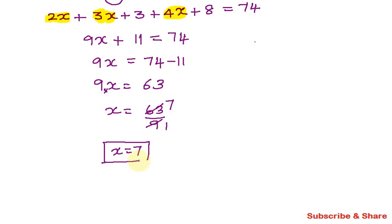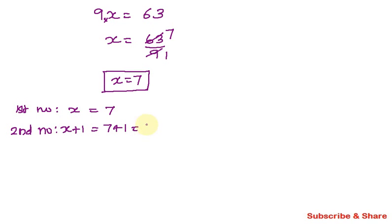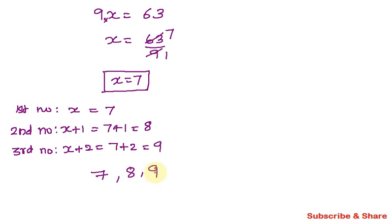Now we can find the three numbers. Since x equals 7, the first number is 7, the second number is 7 plus 1 equals 8, and the third number is 7 plus 2 equals 9.